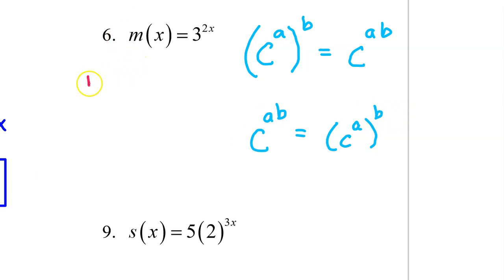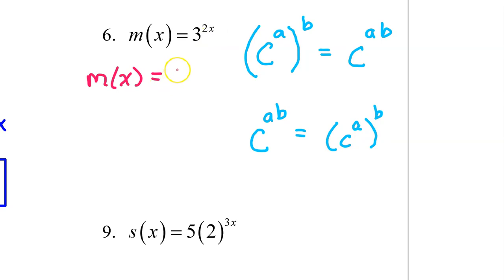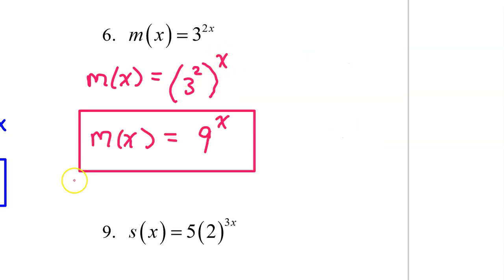Here on number 6, m of x equals 3 to the 2 times x power. I can rewrite this as 3 squared all raised to the x power. Of course, 3 squared is just 9, so m of x equals 9 to the x power.